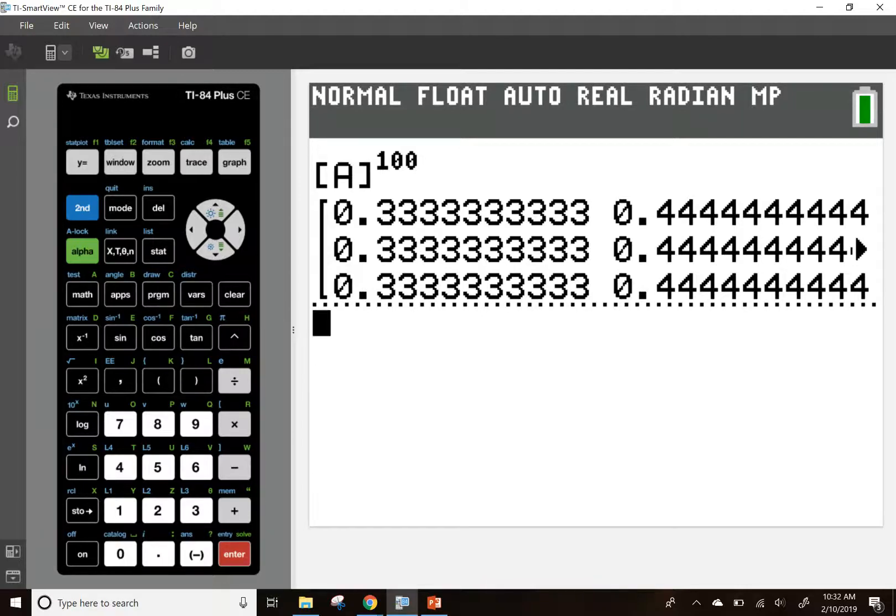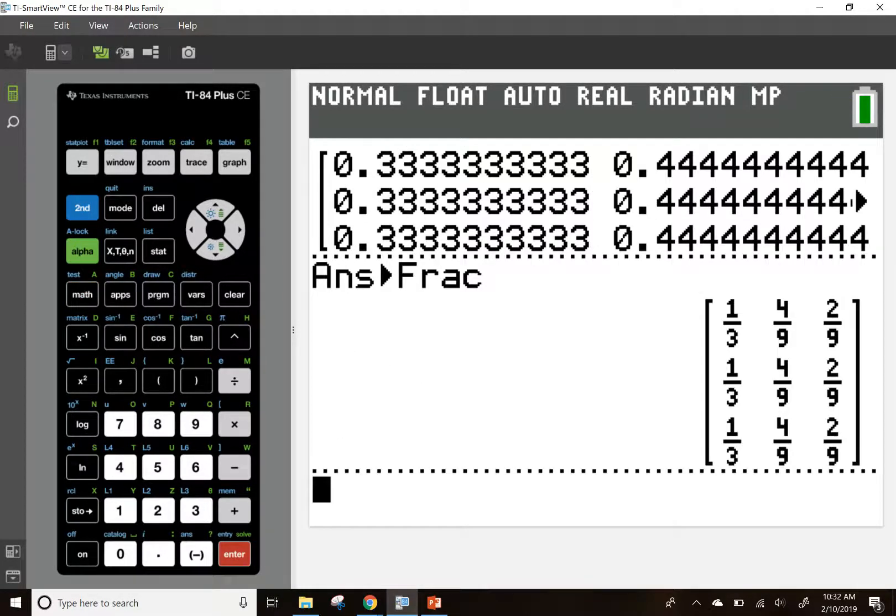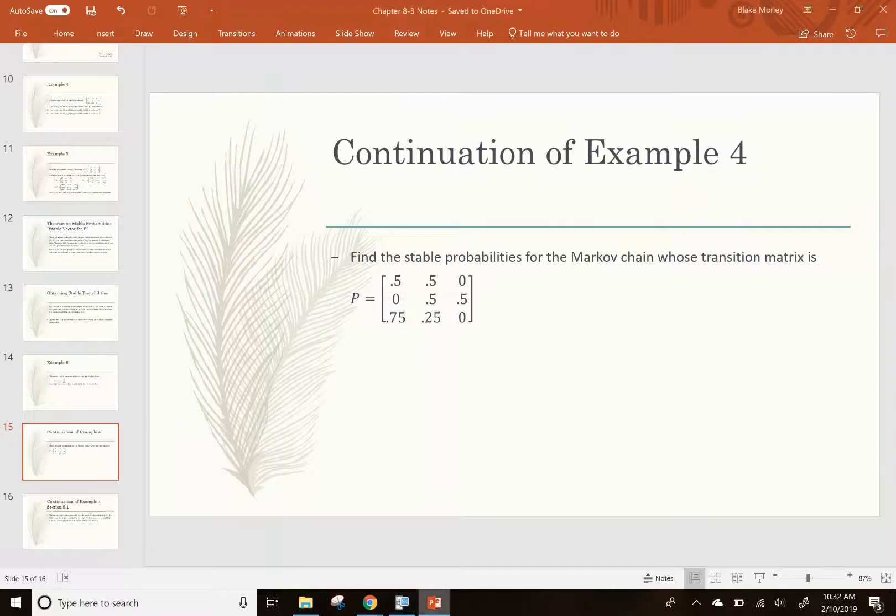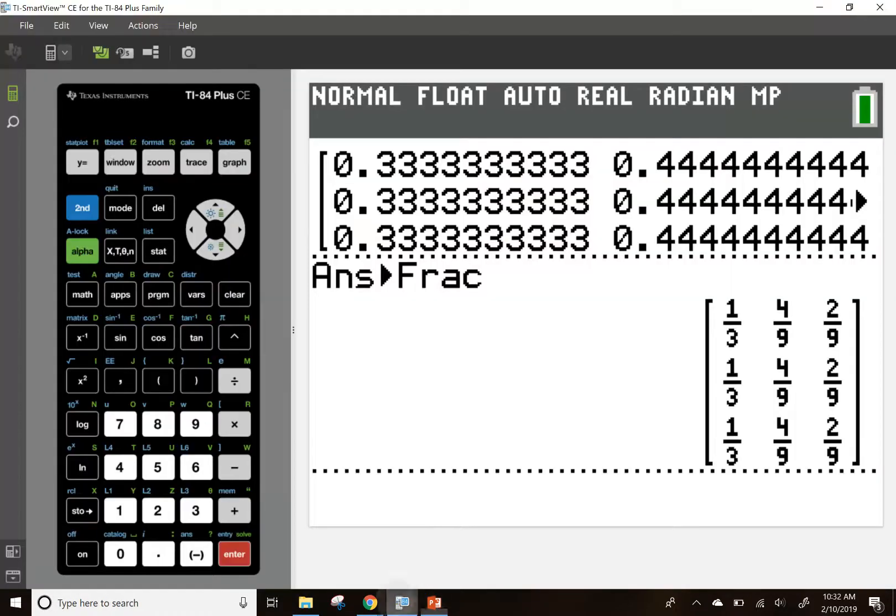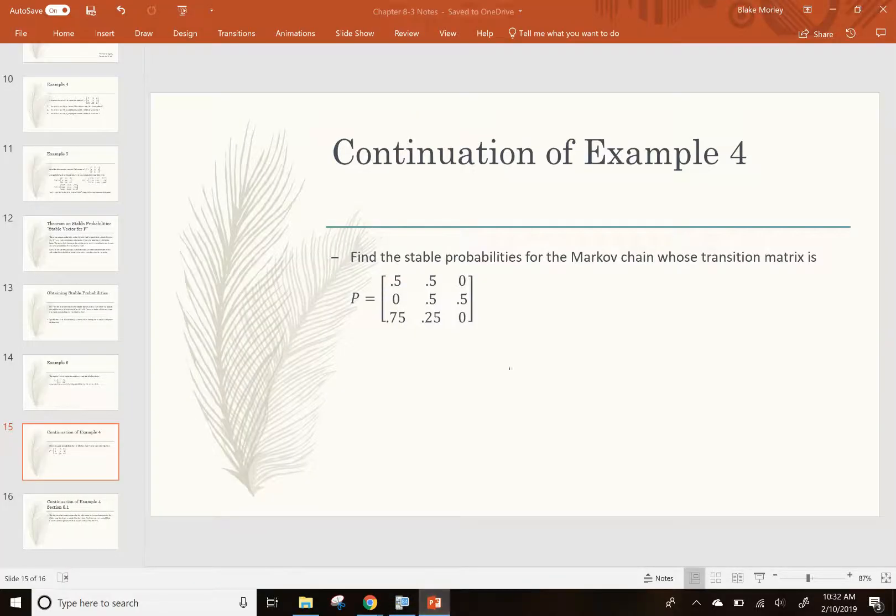So, again, I got the decimals, but to make it fractions, I'm going to hit the math, enter, enter. And I see the fractions, and I'm hoping to see them all match. And if they do, then I did a good enough job picking a big enough exponent. But if they're not all the same, pick a bigger exponent like the 500th power. But this was big enough because I have 1/3, 4/9ths, and 2/9ths all the way across. So, that's our stable vector for that problem. 1/3, 4/9ths, and 2/9ths.